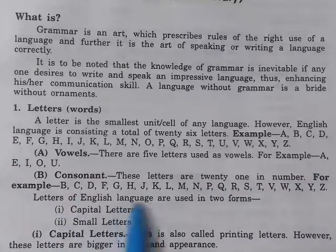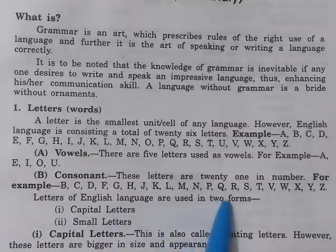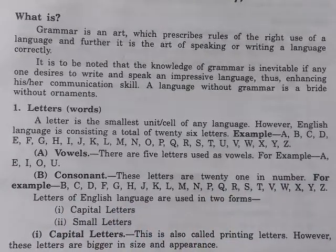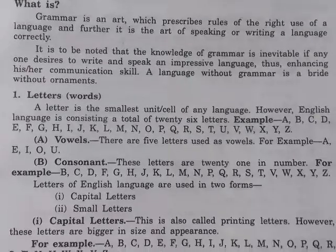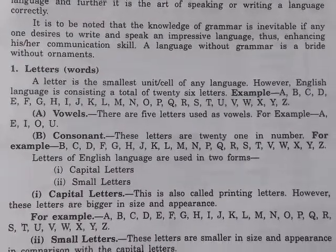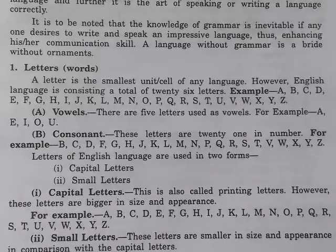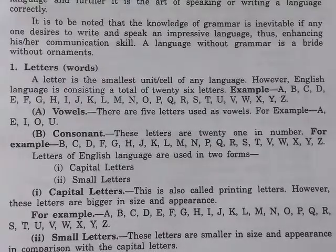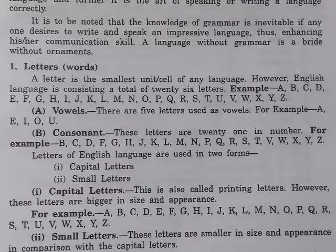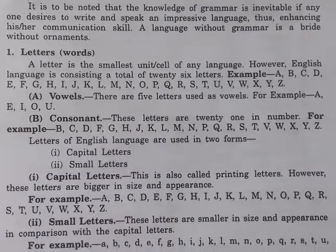Letters of the English language are used in two forms: capital letters and small letters. Capital letters are also called printing letters. These letters are bigger in size and appearance in comparison to small letters.